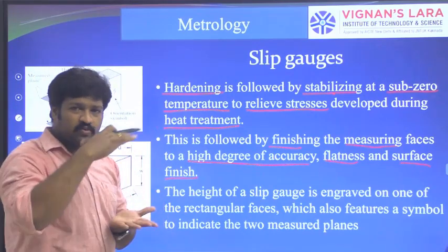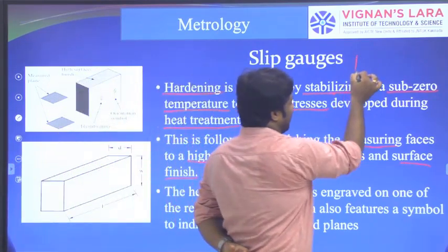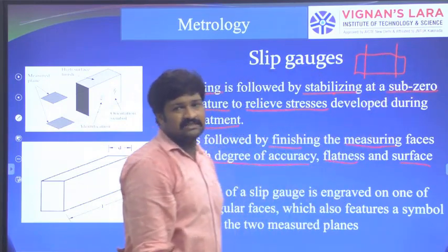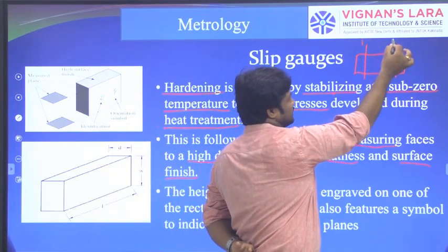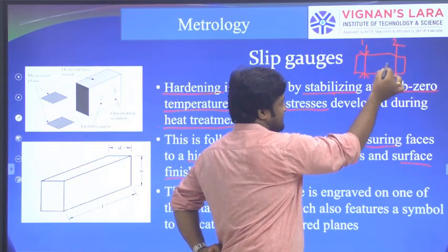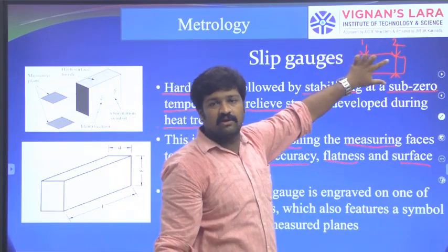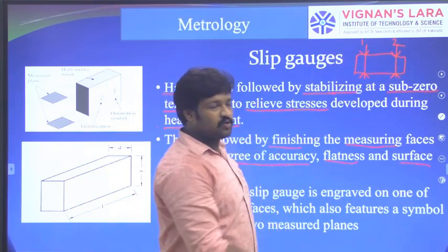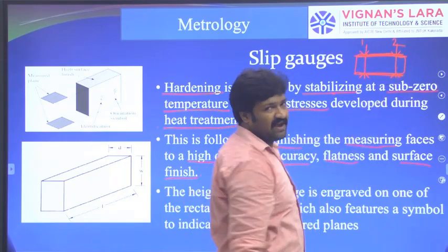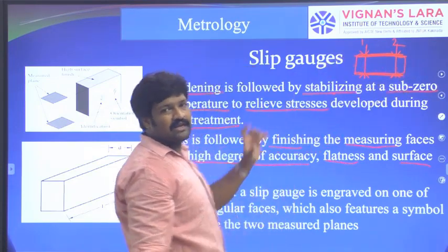The two opposite measuring surfaces must be highly flat. If they are not flat — if they are irregular — then the dimension at one cross-section will not equal the dimension at another cross-section. For example, if we consider two cross-sections, the linear measurement at cross-section one must equal that at cross-section two. To get accurate results, the top and bottom surfaces must be flat so that the dimension is equal at any point.